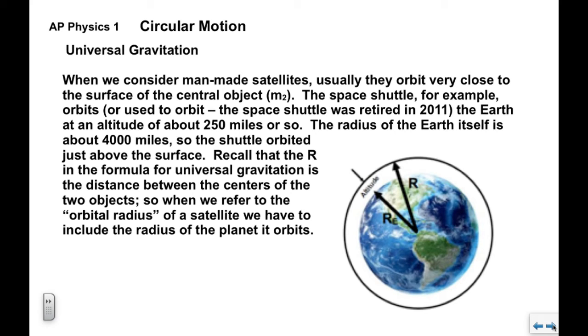Now we're going to see various types of satellites, moons and planets orbiting the sun and so on. We're also going to look at synthetic or man-made satellites. Usually they orbit very close to the surface of the central object. If I'm going to put a satellite around the Earth, it's going to be pretty close to the surface. You might remember the space shuttle, although it was retired a few years ago.